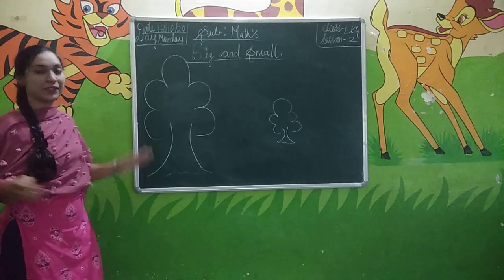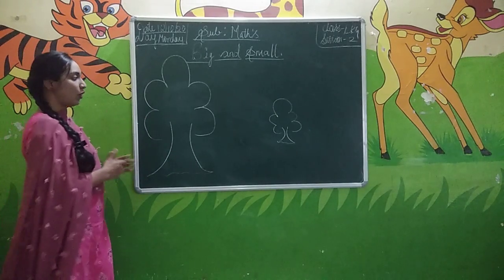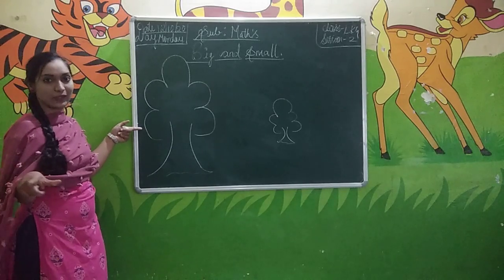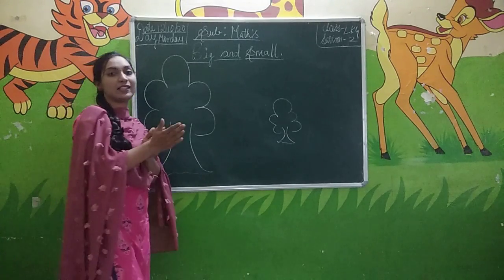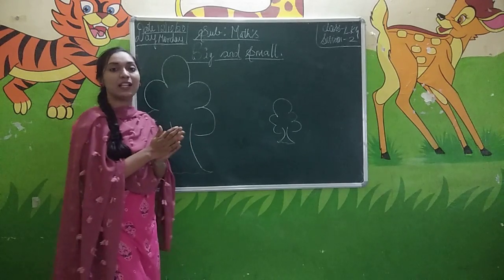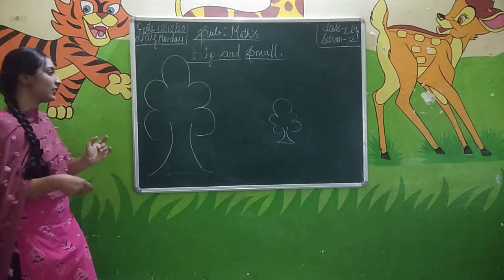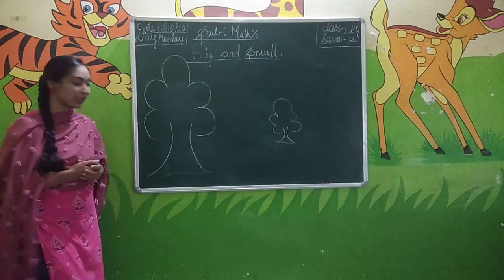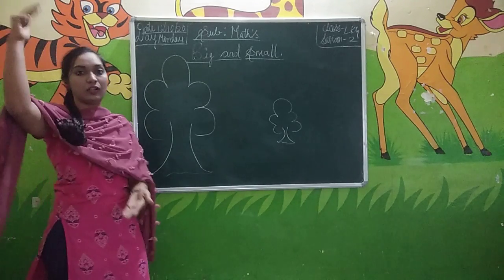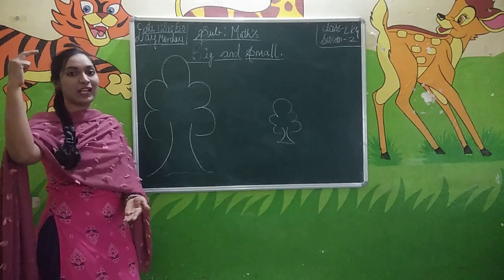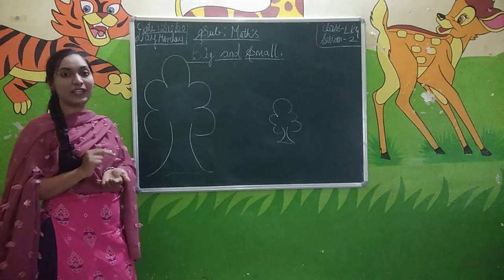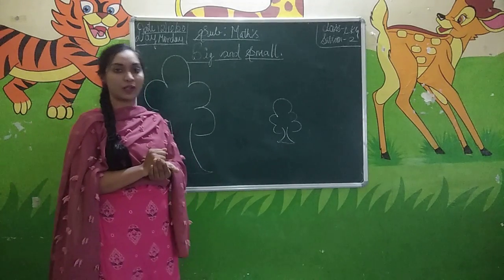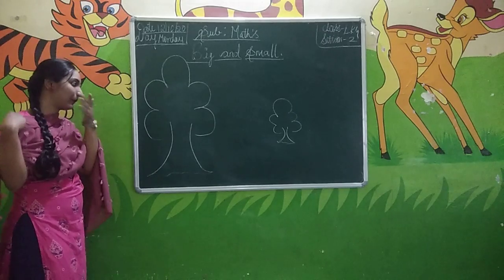So friends, here I have drawn pictures of trees. What is there in the picture? Trees. So which color will the trees be? Trees will be green color. So let us compare which is the big tree and which is the small. Big means you know which is big, whereas small means something which is very small. So let us compare.